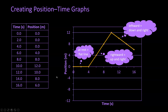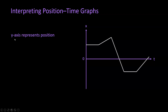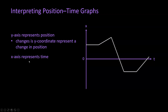Now that we've learned how to create a position time graph, let's go ahead and learn about interpreting it. Here's a position time graph representing the motion of an object. We're going to break this down and learn how to interpret the shape of the lines as well as the position of the lines and what it means in terms of motion. Two important things to keep in mind: the y-axis represents position, so if you have a change in the y coordinate, it represents a change in the object's position. And the x-axis represents time, so if you have a change in the x coordinate, it represents a change in time.